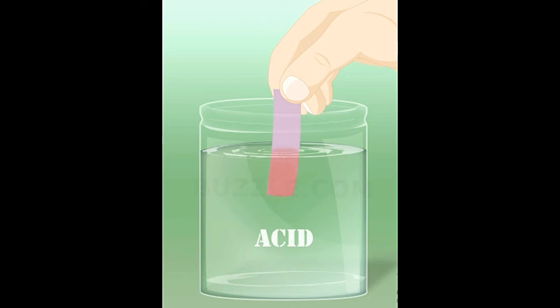If a substance doesn't change the color of a red litmus paper, it may be acidic or neutral, since neutral compounds have no effect on the litmus paper.